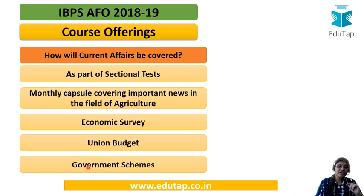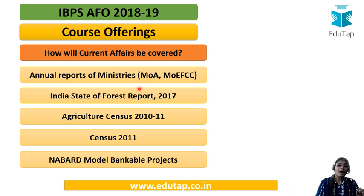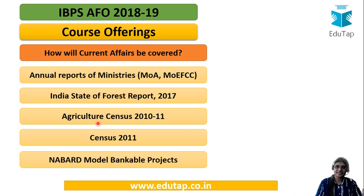We also have government schemes specifically related to agriculture, and there are questions based on these in IBPS AFO. Apart from that, we would also be providing you the annual reports of ministries, specifically the Ministry of Agriculture and Environment. Then we have the India State of Forest Report 2017, which is the latest one, Agriculture Census 2010-11 with important data points, and Census 2011.